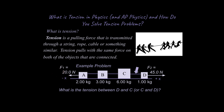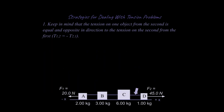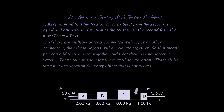Let's talk about strategies for dealing with tension. First, tension on one object from a second is equal and opposite to the tension of the second from the first — a logical consequence of Newton's Third Law: for every force there's an equal and opposite reaction force. Second, if there are multiple objects connected with ropes or other connectors, those objects will accelerate together.